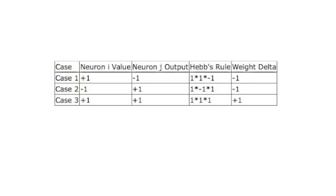Now, let's look at a couple of examples to see how Hebb's Rule would be applied. In case one, we have a neuron i value, which is the input, of plus one. The output is minus one. Therefore, Hebb's Rule, and all three of these assume a learning rate of one, is going to be one times one times negative one. The weight Delta will be negative one. That is, the weight will be decreased by one. This will reinforce the negative one output when a positive one is presented to this neuron.